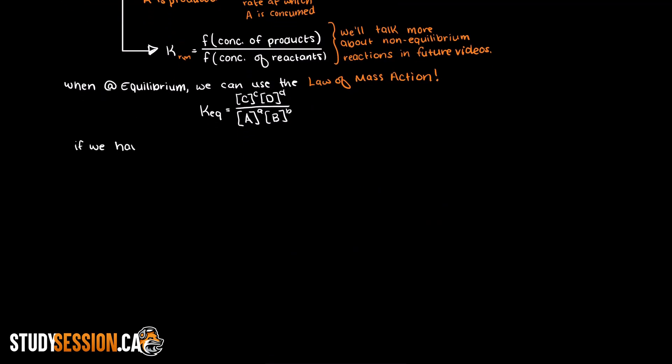So if we have 2A plus 2B in equilibrium with C plus 2D, then we end up with the following equation. To build on this, we could be given concentrations for each of our molecular species and could use this information to find the equilibrium constant. Alternatively, we could be given an equilibrium constant and all but one molecular concentration, and from that find our missing concentration.